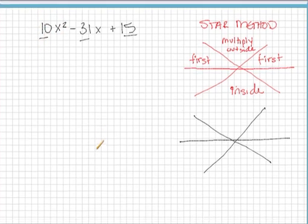So let's go ahead and apply it to this example. We're going to multiply the outside numbers. And we're going to put the product in the top triangle. So 10 times 15 is 150. So that's what goes up here. In the bottom triangle, we just put the inside number. So negative 31. Gotta count that negative. And then in the top left and top right triangle, we just put the 10.